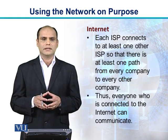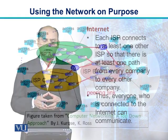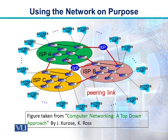Everyone who is connected to the Internet can communicate. In this diagram, we can see three different ISPs: ISP-A, ISP-B, and ISP-C. Each ISP consists of a number of routers. These ISPs are connected with each other and allow every computer in the world to communicate with every other computer.